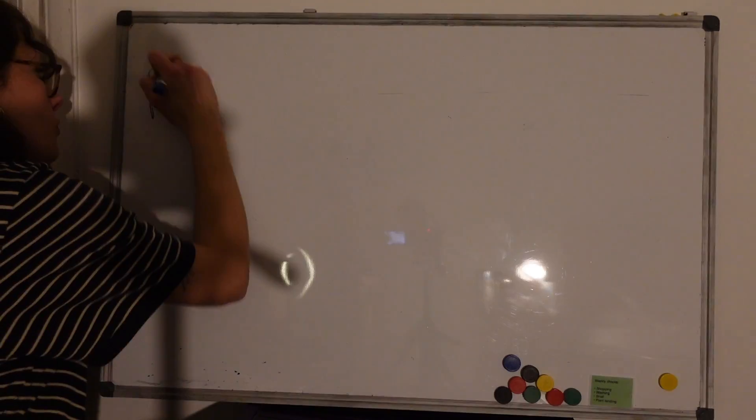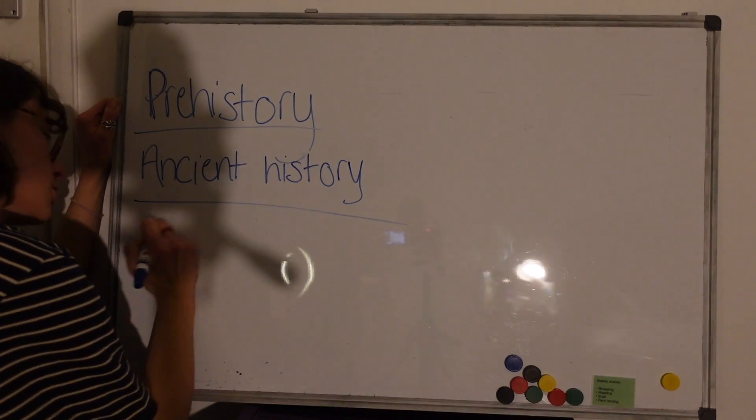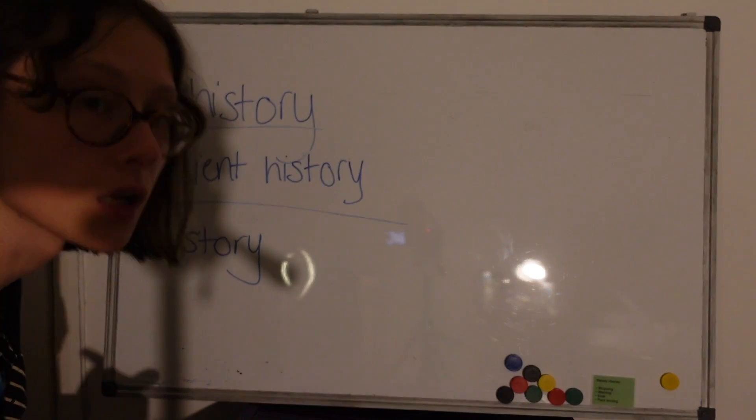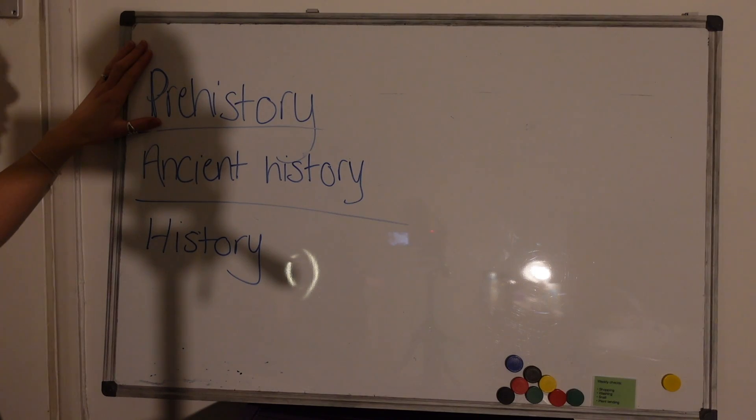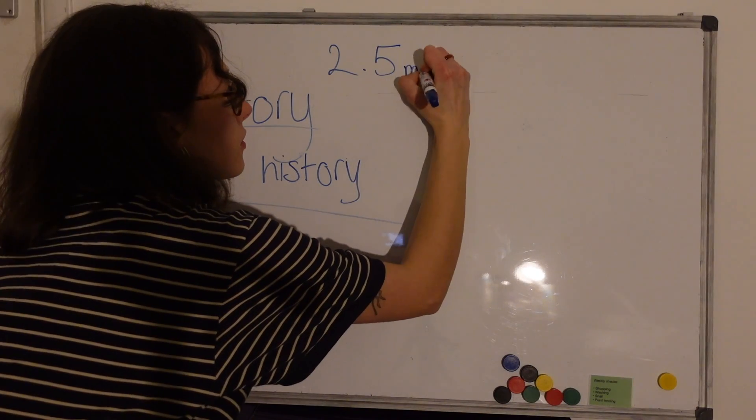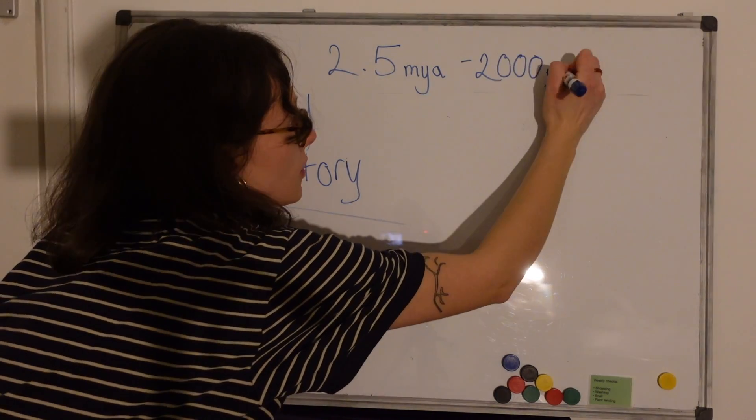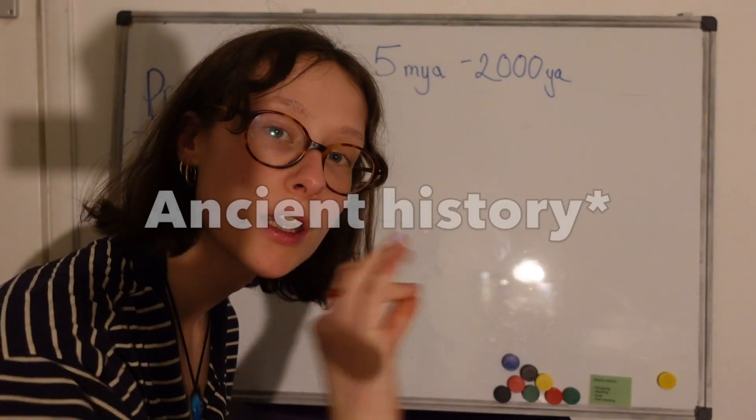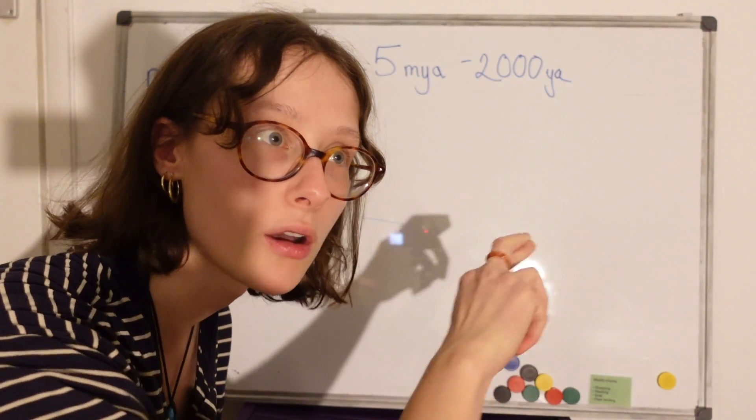So we start off with prehistory, prehistory, ancient history and history. I am gonna neaten this up don't you worry. So this is what we're focusing on right now and this lasted from between 2.5 million years ago to about 2,000 years ago. Now for the sake of our argument history and prehistory are going to overlap somewhat when it gets past the neolithic.